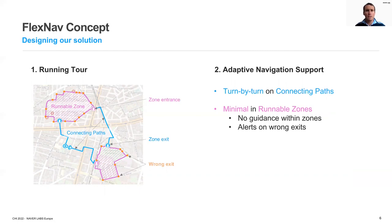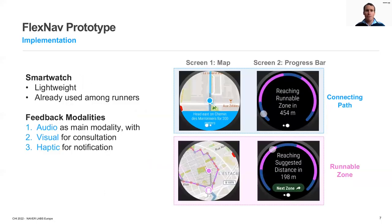In these areas, FlexNav will only help runners to stay in and explore the zone and then to reach the planned zone exit when they wish to. We implemented a prototype of FlexNav on a Suunto 7 Sport smartwatch — a good compromise between a lightweight commonly used wearable and convenient specifications to develop and test several UI modalities. The runner receives most navigation instructions via headphones and can also consult the watch screen and receive haptic notifications through vibrations.